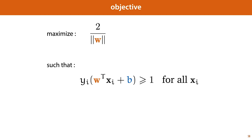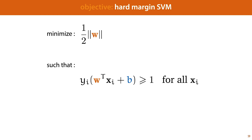Almost all the complexity of this loss function is in the constraints. Without them, we could just let all elements of w go to 0. However, the constraints require the output of our model to be larger than 1 for all positive points and smaller than minus 1 for all negative points, which will automatically push the margin up to the support vectors but no further. Since we tend to work with loss functions that we minimize, we take the inverse of the objective and minimize that instead. The result is called the hard margin support vector machine — it's called hard because no points are allowed to violate the constraint and end up inside the margin.